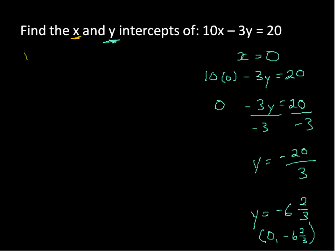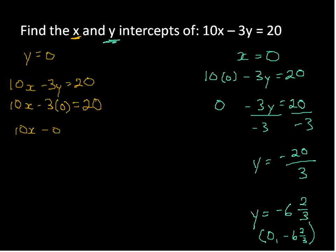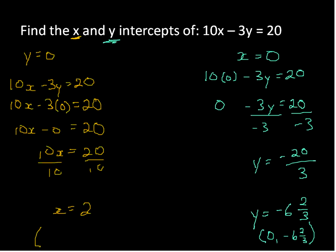Let's take our x-intercept and see if we get something a little nicer. For our x-intercept, y is equal to 0. So I'll solve 10x minus 3 times 0 equals 20, which leaves me at 10x equals 20. Dividing both sides by 10 gives me x equals 2. So the point where it crosses the x-axis is (2, 0). So again, you can find the x and y-intercepts using a graph or using math. If you're looking for the x-intercept, change y to 0. If you're looking for the y-intercept, make the x value equal to 0.